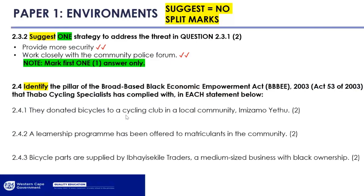Question 2.3.2 says suggest one strategy to address the threat. We identified the threat as the high crime area, so this is a higher-order question because you have to suggest a practical strategy to eliminate that threat. For example: provide more security, work closely with the community police, employ a security guard, install CCTV cameras. Anything relevant that can address the problem of high crime and secure the business. We just want one strategy, so give us one — don't waste your time.